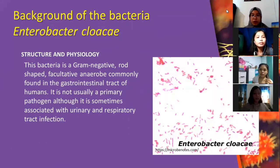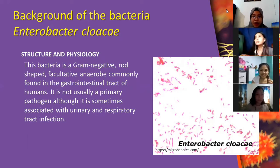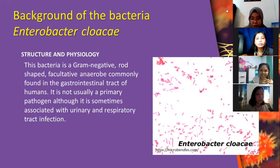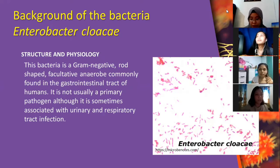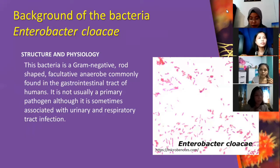Before we proceed to the case presentation, let's have some background about the bacteria Enterobacter cloacae. This bacteria is gram-negative, rod-shaped, facultative, and is commonly found in the gastrointestinal tract of humans. It is not usually a primary pathogen, although it is sometimes associated with urinary and respiratory tract infections.